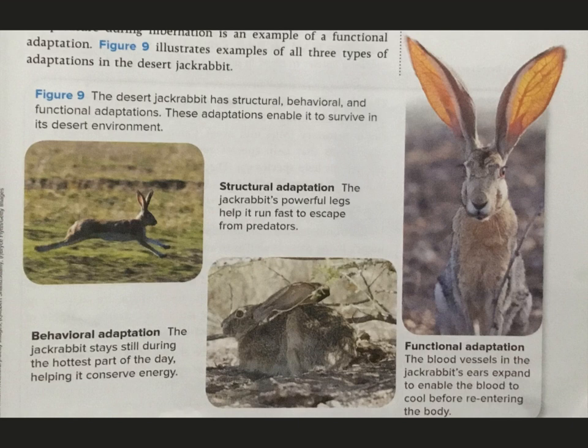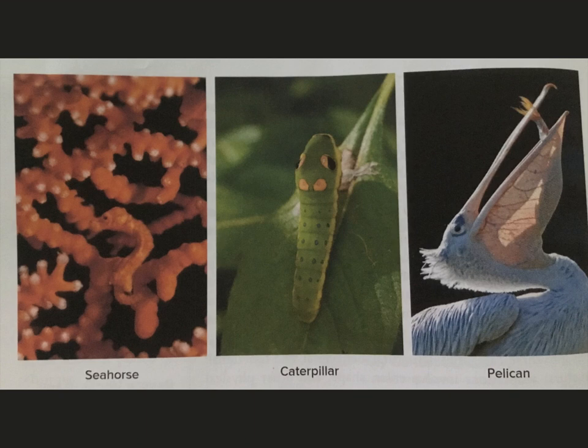Here are some adaptations you can see in the pictures. In the first picture, look for the seahorse — he blends in very nicely with the coral. And then there's that caterpillar whose coloring makes it look like a snake.